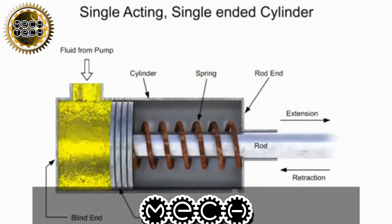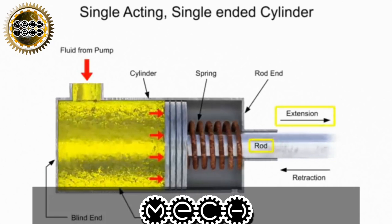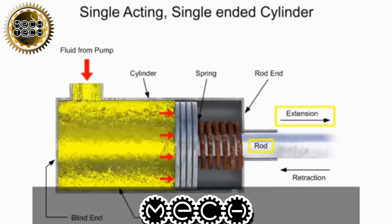A single-acting cylinder produces linear motion in one direction. When a control valve directs fluid through the inlet port into the blind end, pressure builds up and generates a force on the piston. When the pressure buildup is large enough, the piston begins to move, extending the rod. This is called the forward stroke.